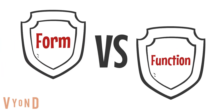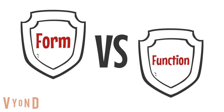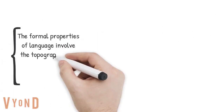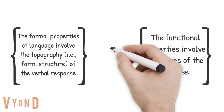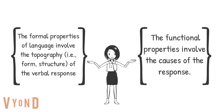In verbal behavior, there are the formal properties of language and the functional properties of language. The formal properties involve the topography, or the form or structure, of the verbal response — what does that look like? The functional properties involve the causes of the response, or the function of the response.